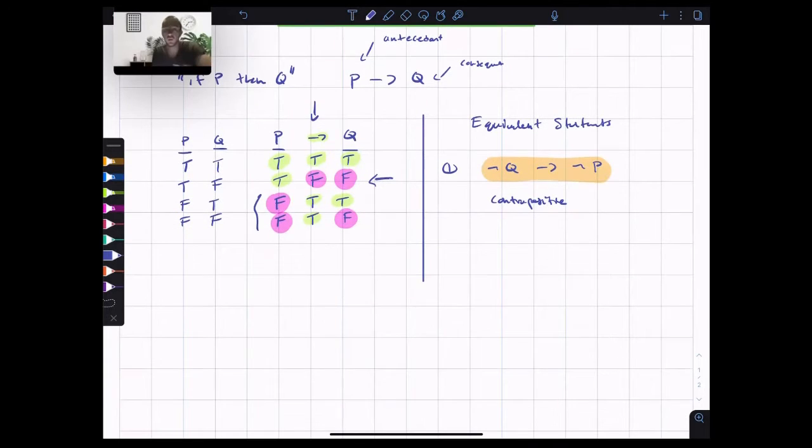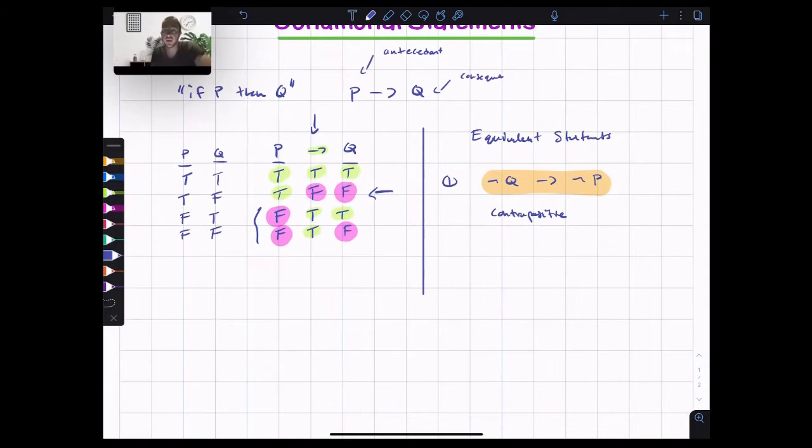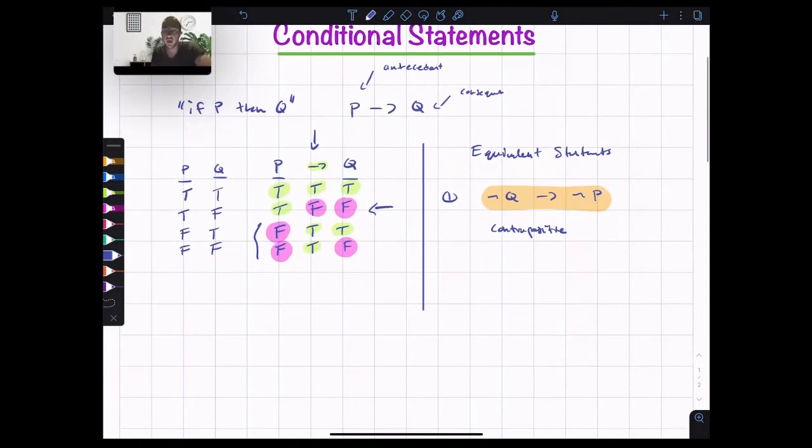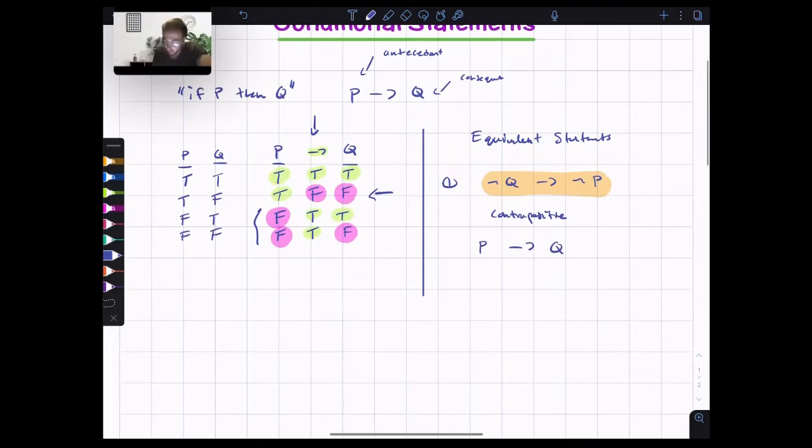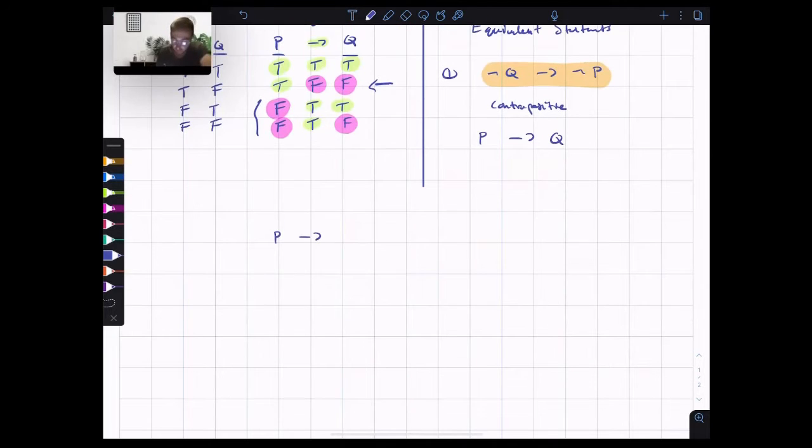And this is really, really important. This is saying that if Q doesn't happen, then P won't happen. And this is actually the same statement, logically equivalent to P then Q. The way we would express this logically is we would say P then Q if and only if not Q then not P.